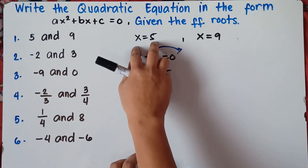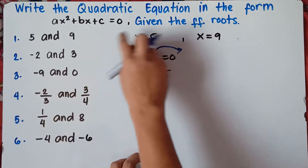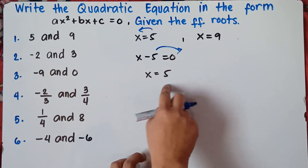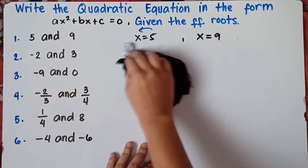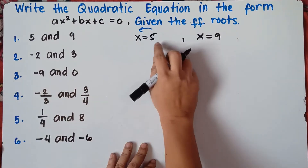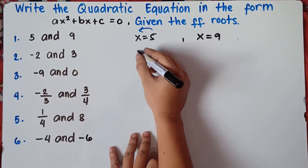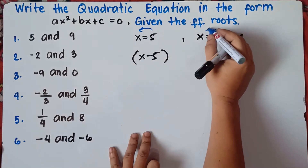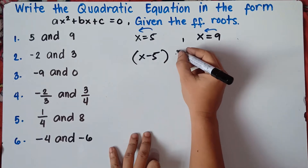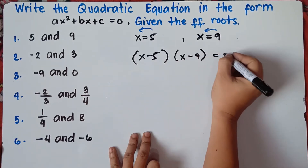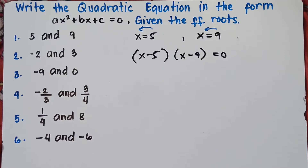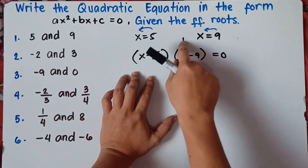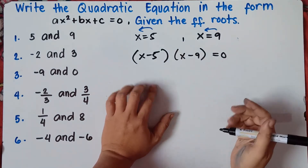When we have our roots, we transpose 5 from right to left. Because x minus 5 equals 0 is the same as x equals 5. So we do it in reverse. We transpose 5 from right to left — this will be x minus 5. And for 9, transpose from right to left — this is positive 9, it will be x minus 9. Then equals 0. Once you have this, you can do the FOIL method.